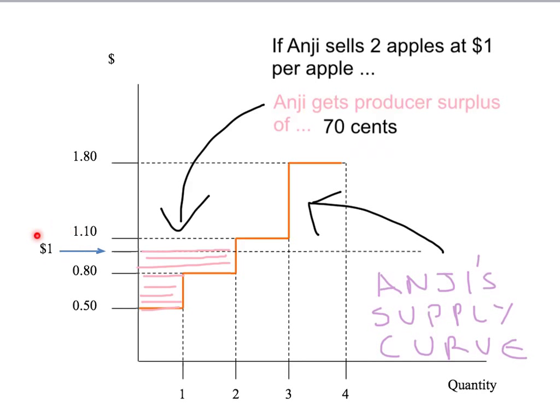That pink shaded area is equal to 70 cents. A dollar minus 50 cents on the first unit — 50 cents — plus a dollar minus 80 cents on the second unit — which is 20 cents. 50 plus 20: 70 cents producer surplus for Anji.